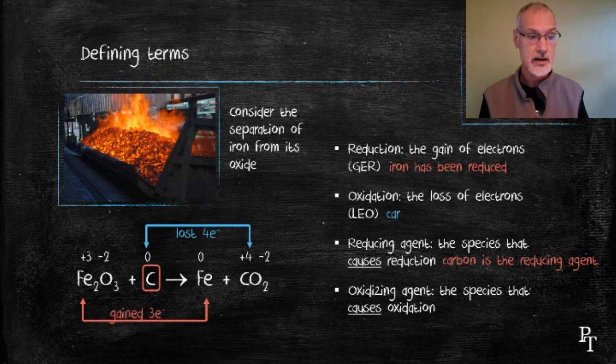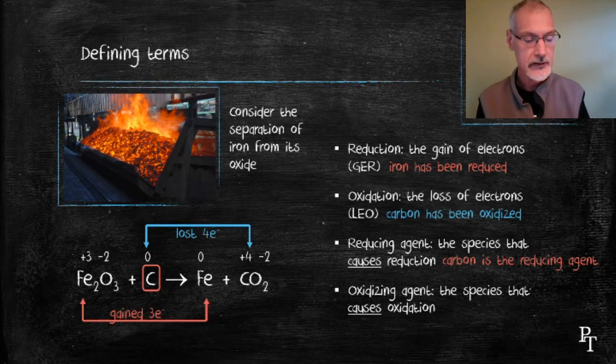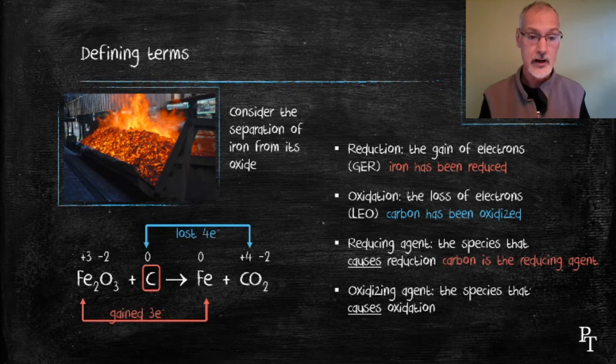Simultaneously, I can look at the carbon, which has lost four electrons, and say that it's been oxidized. The substance that caused this oxidation was the iron oxide.